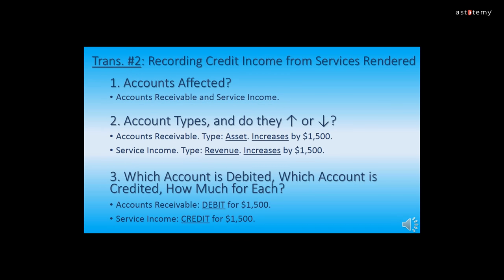Now we go through the first three steps of recording transaction two, recording credit income from services rendered. Step one: the two accounts affected are Accounts Receivable and Service Income. Step two: Accounts Receivable is an asset type and it increases by $1,500. Service Income is a revenue type and it also increases by $1,500. Step three: Accounts Receivable has a normal debit balance, so it will be debited for $1,500. Service Income has a normal credit balance, so it will be credited for $1,500.